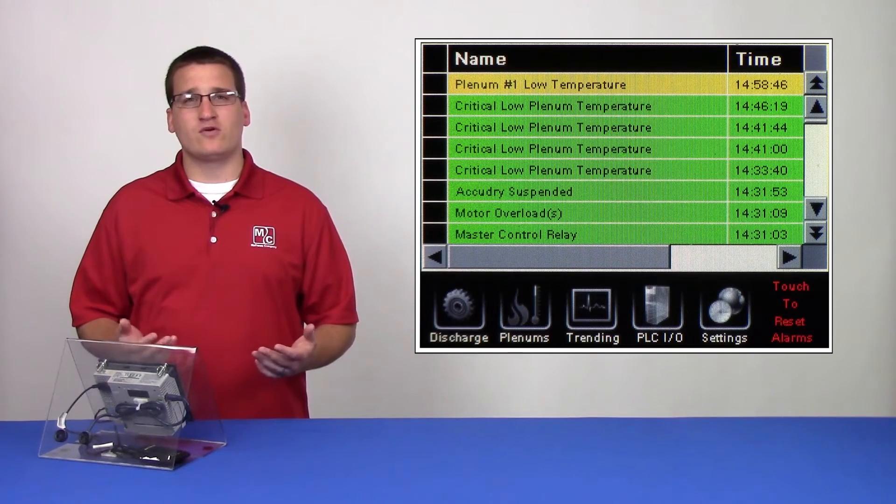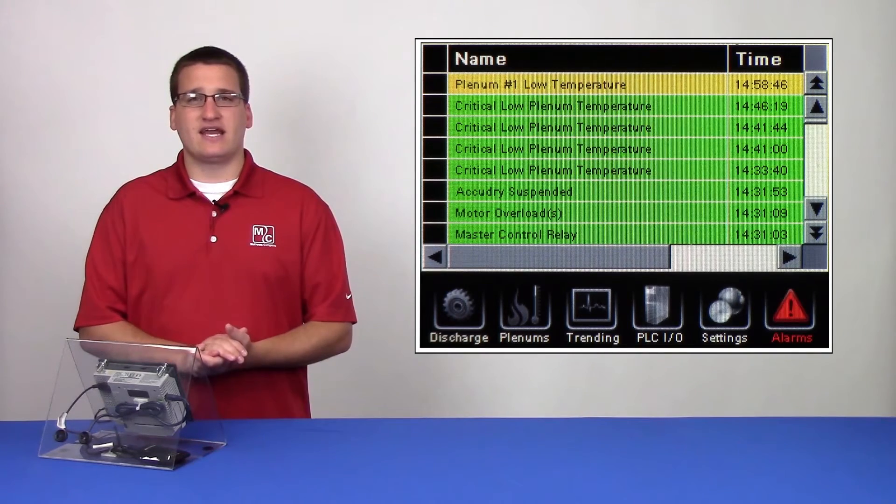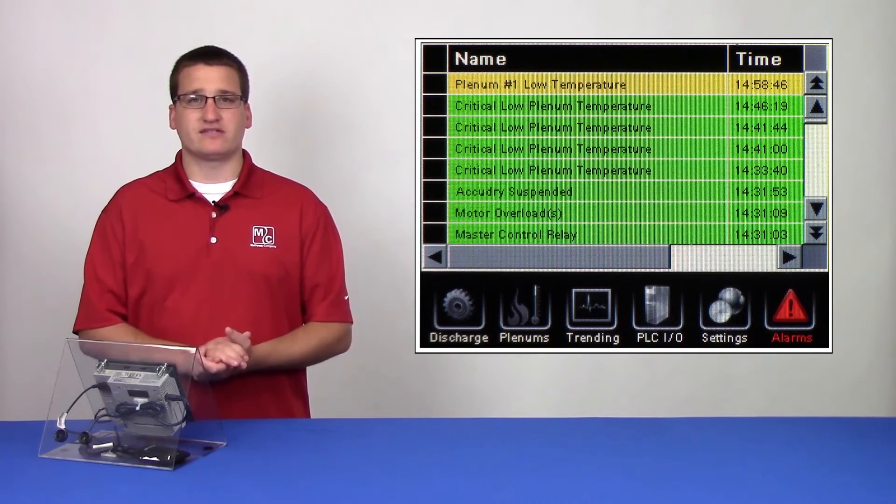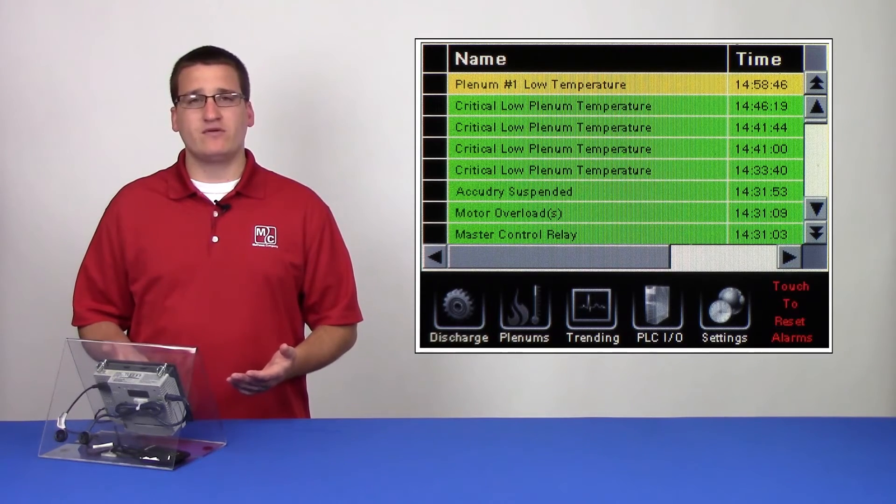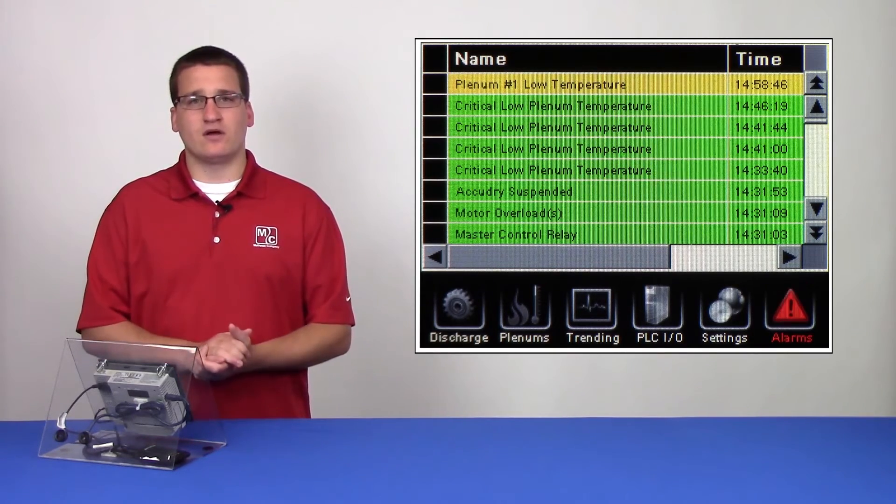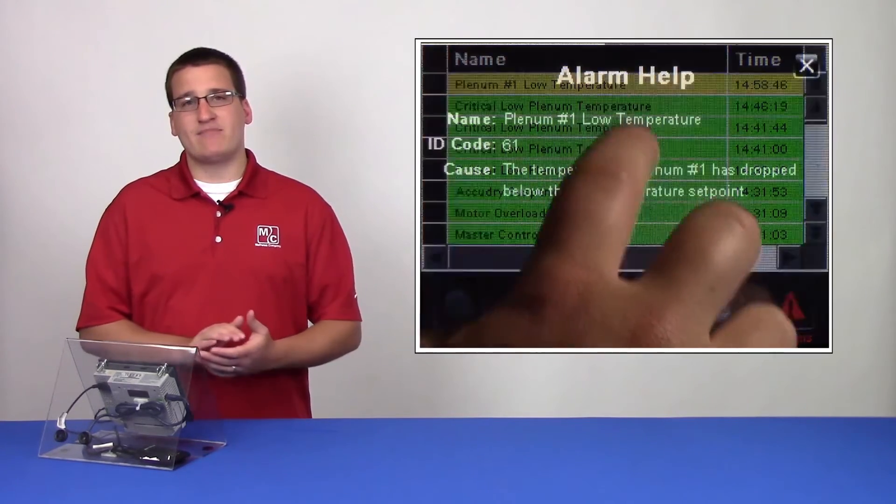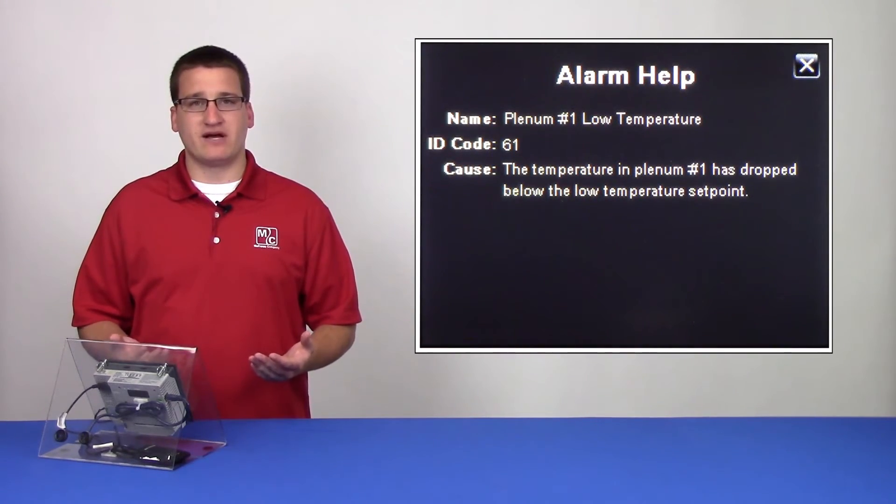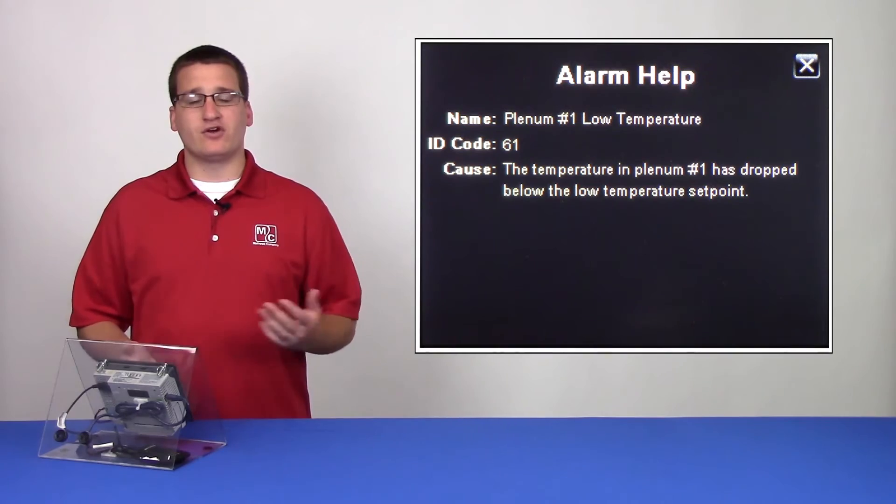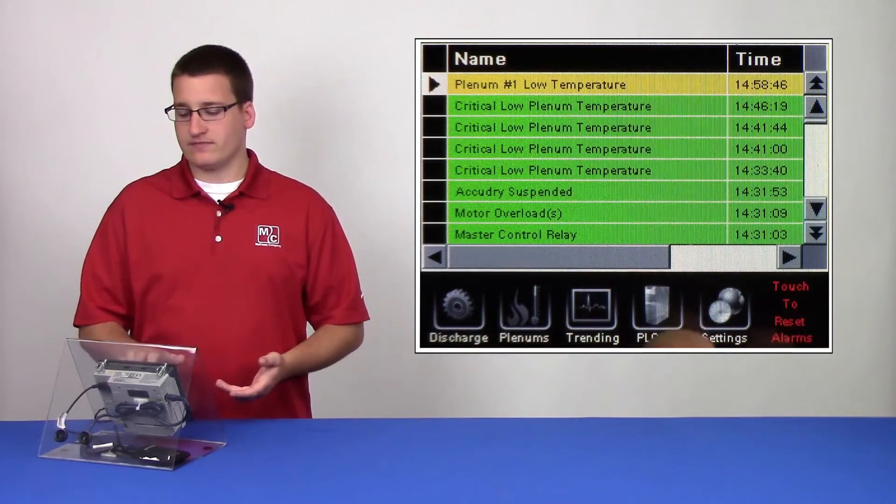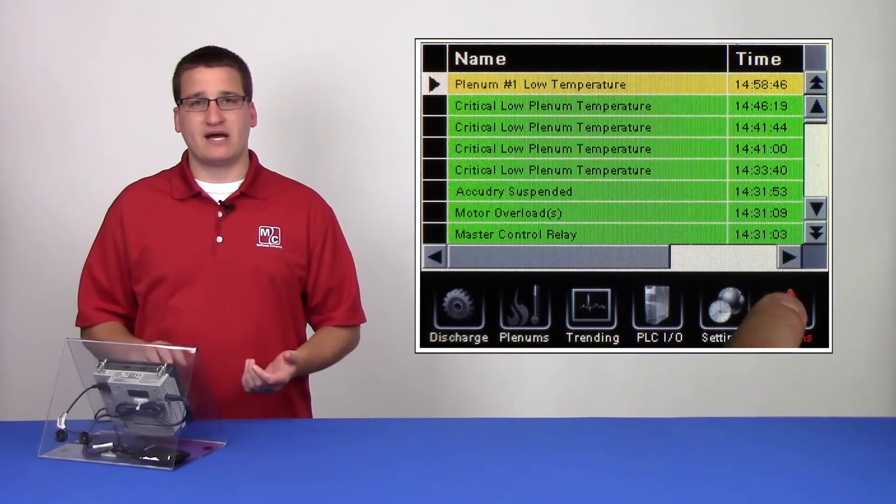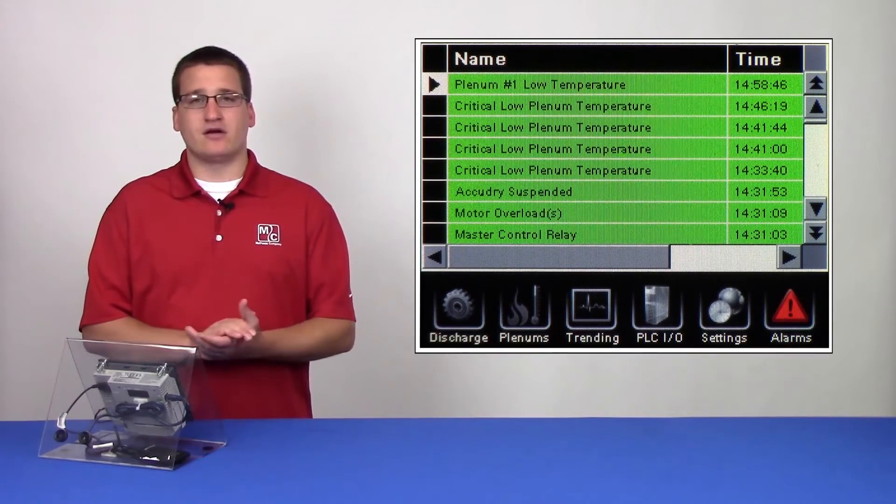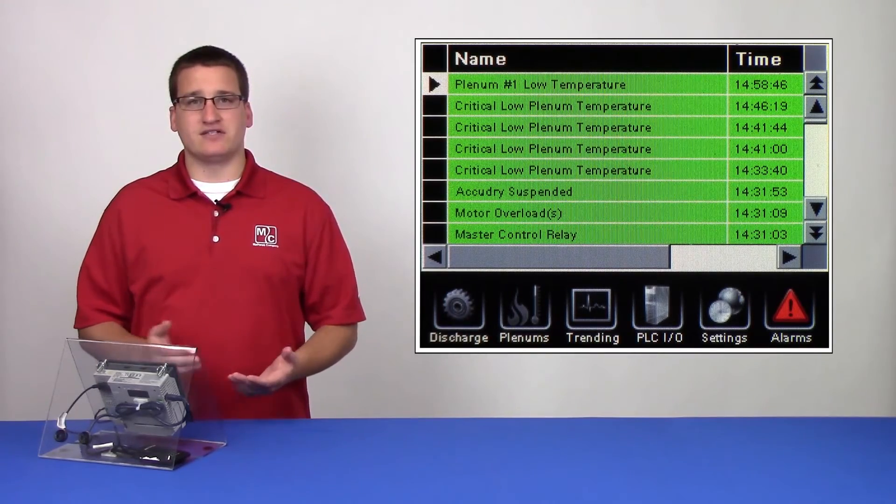If you have a yellow or a red alarm, that indicates a currently active alarm that must be fixed. In our example, we can see that we have one yellow alarm. We can tap on the line to get more information about the alarm. We would then go and address the issue that's described, and then come back to the HMI and double tap the alarms page in order to acknowledge the alarm.